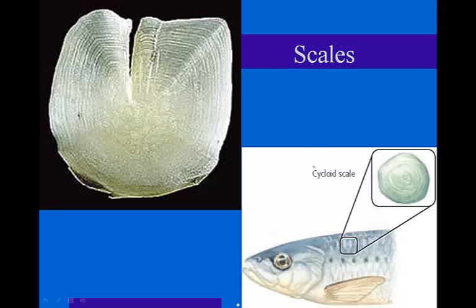Cycloid scales — you might notice the prefix for 'cycle' — tend to be circular or rounded. They have two basic parts: the inner solid structure made out of bone, and an outer collagen layer. These scales are not shed as the fish grows but grow with the animal, and the number of scales doesn't increase. As a result, we can use the growth rings — like trees and clams — to determine the age of the fish.